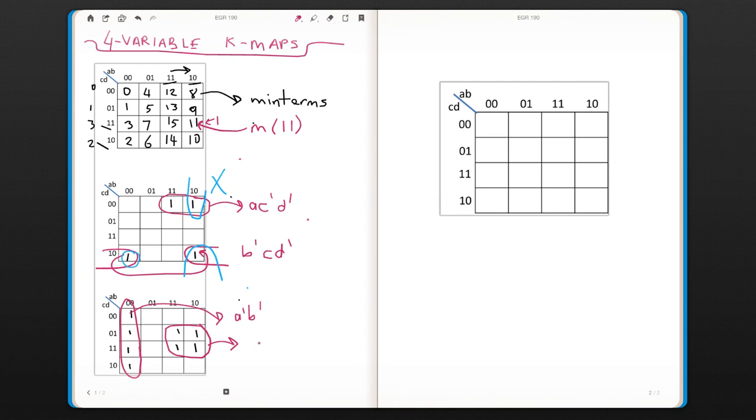For this one, A is not changing. B is changing. C is changing. And D is not changing. Again, we did not take a term like this, which we could have. But again, it's not going to help us.